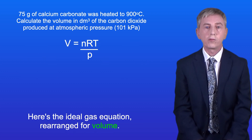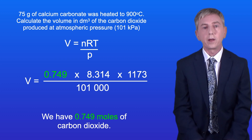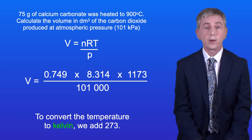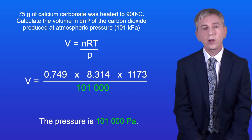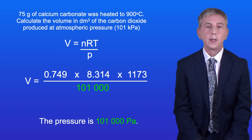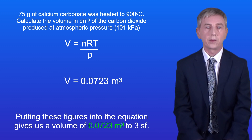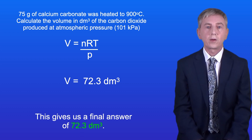Now we can use the ideal gas equation to calculate the volume of the carbon dioxide. Here's the ideal gas equation rearranged for volume. We've got 0.749 moles of carbon dioxide. The temperature is 900 degrees Celsius — to convert to kelvin we add 273, giving us 1173 kelvin. The pressure is 101,000 pascals. Putting these figures into the equation gives us a volume of 0.0723 metres cubed to three significant figures. To convert this to decimetres cubed we multiply by 1000, giving us a final answer of 72.3 decimetres cubed.